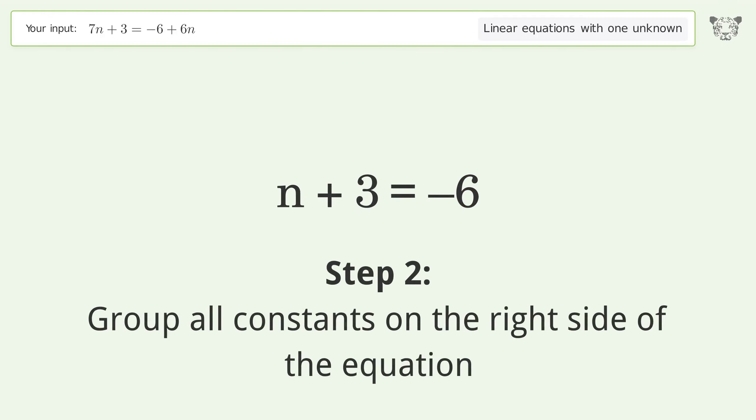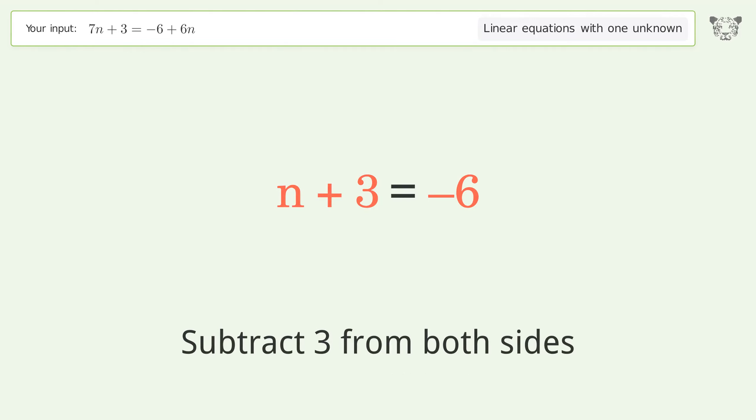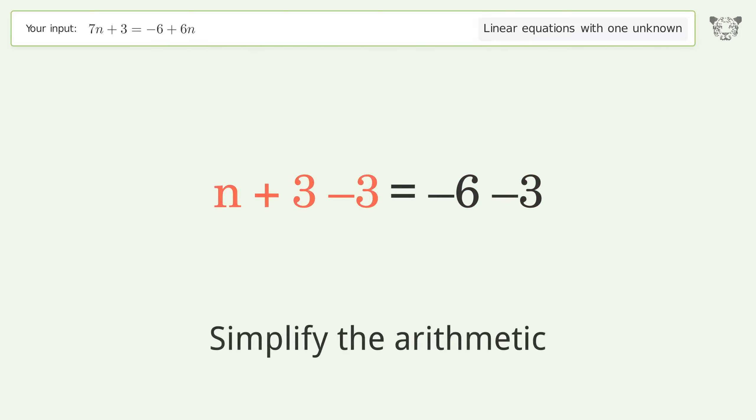Group all constants on the right side of the equation. Subtract 3 from both sides. Simplify the arithmetic.